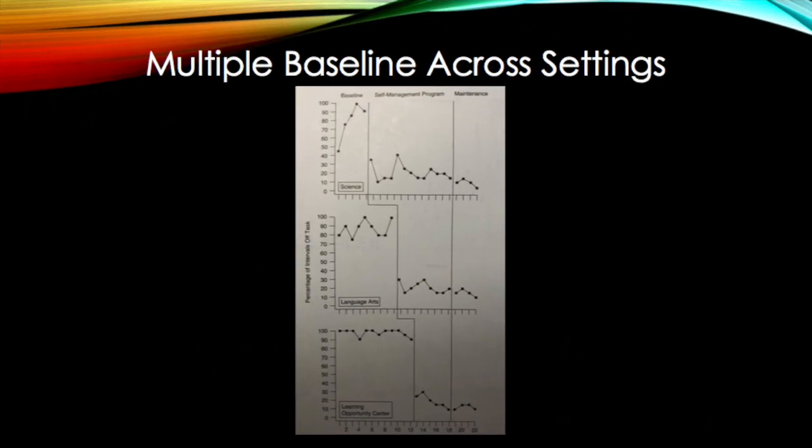If a functional relationship exists, the baseline data for each setting will remain consistent until the intervention is implemented. The trend shift should only be present after the individual setting receives the intervention, as shown in the example graph.